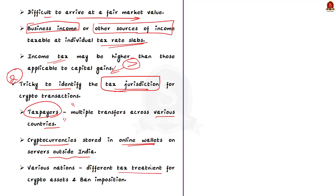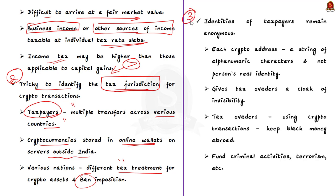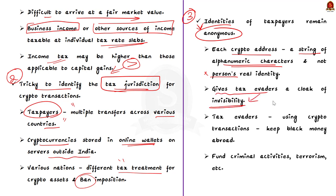Various nations have differing tax treatment for crypto assets including imposition of a general ban on them. The third challenge is that the identities of taxpayers who transact with cryptocurrencies remain anonymous. Each crypto address comprises a string of alphanumeric characters and not the person's real identity. Thus it gives tax evaders a cloak of invisibility. Exploiting this, tax evaders have been using crypto transactions to park their black money abroad and fund criminal activities, terrorism, etc.